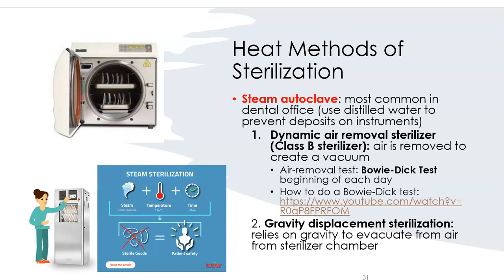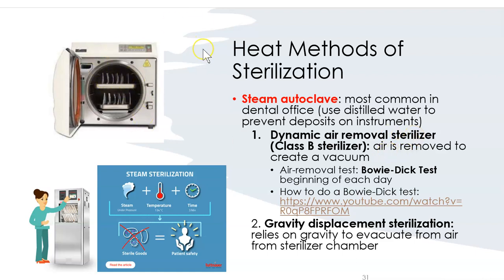To sterilize, we use autoclaves, typically with distilled water rather than tap water to prevent deposits on instruments. The two main types are: the Class B sterilizer (dynamic air removal), where air is removed through a vacuum — this requires a Bowie-Dick test; and the gravity displacement sterilizer, where gravity evacuates the air using high steam temperature for a set time to achieve sterility.